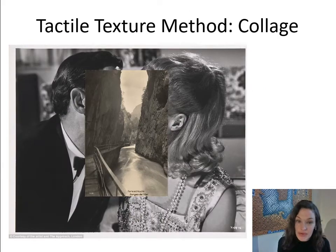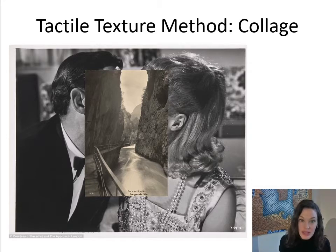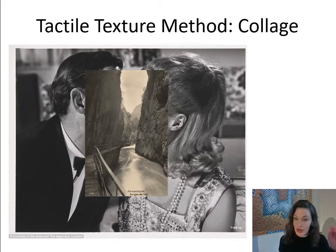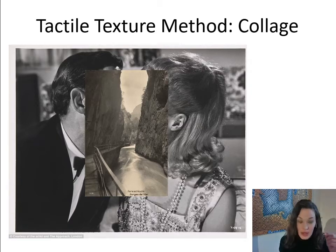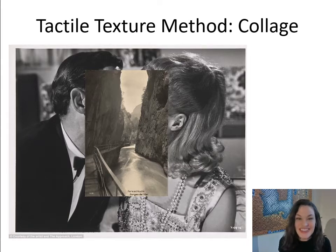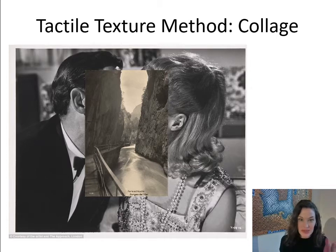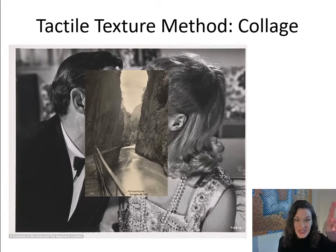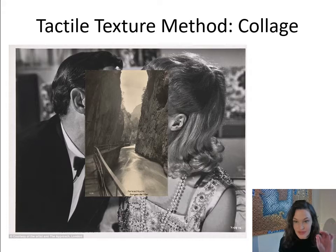Another medium that has a particular tactile texture is collage. When we see collage where the edges of one piece of paper are attached to another, there is a bit of additional thickness there. This is a piece by John C. Zeckard. You can imagine that if this were here in real life, you could touch the edges where one piece of paper overlaps the other and you would feel that ridge.